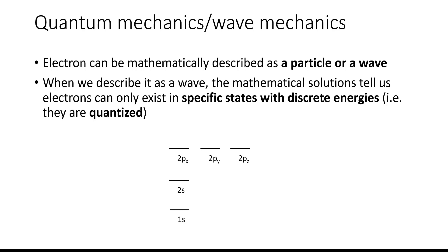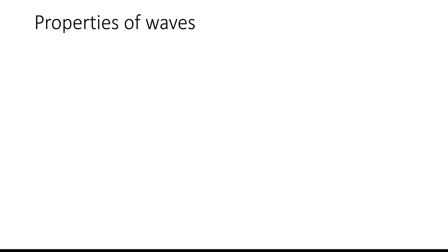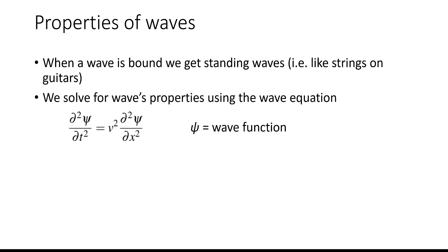So how do we move from electrons being described as waves to orbitals? Well first let's start by talking about properties of waves. When a wave is bound, we get standing waves. You can think about it as kind of like strings on guitars.